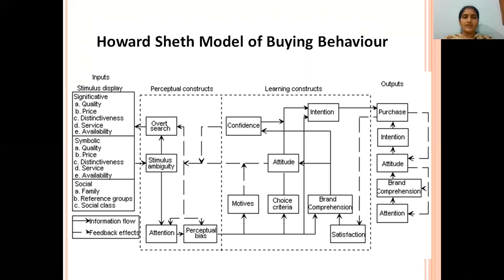Under Significative, we have Quality, Price, Distinctiveness, Service, and Availability. Under Social variables, we have Family, Reference Groups, and Social Classes. In our previous sessions, we discussed in detail what reference groups are, how family influences consumer behaviour, and what the different types of social classes are and how they influence buying behaviour. All these variables are considered as input variables under this model.